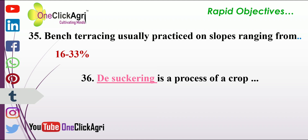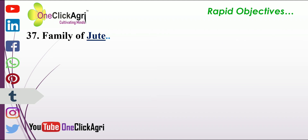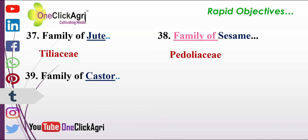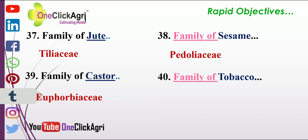Desuckering is a process associated with the crop tobacco. The family of jute is Tiliaceae. The family of sesame is Pedaliaceae. The family of castor is Euphorbiaceae. The family of tobacco is Solanaceae.